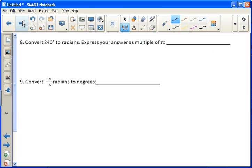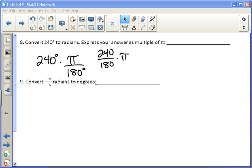Number 8, convert 240 degrees to radians. Express your answer as a multiple of pi. To convert something to radians, you multiply it by pi over 180. Now since we want to leave it in terms of pi, we need to not plug pi in our calculator. Just plug the 240 over 180 in.